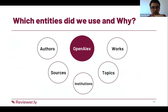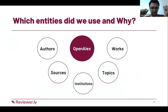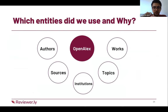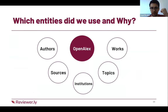These are the OpenAlex entities we used in our work: actual authors and works, as mentioned, along with topics. We also use institutions for detecting conflict of interest, and we plan to use sources to suggest more accurate reviewers for each paper.